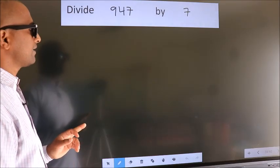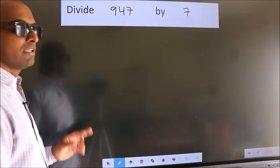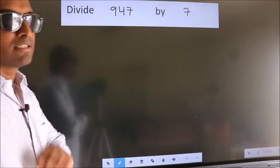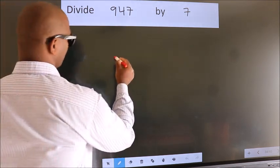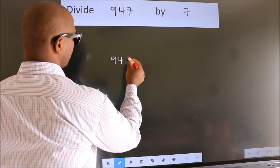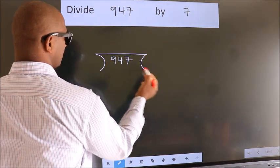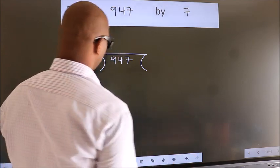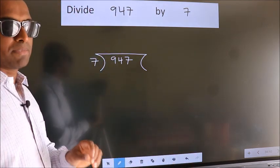Divide 947 by 7. To do this division, we should frame it in this way. 947 here. 7 here. This is your step 1.